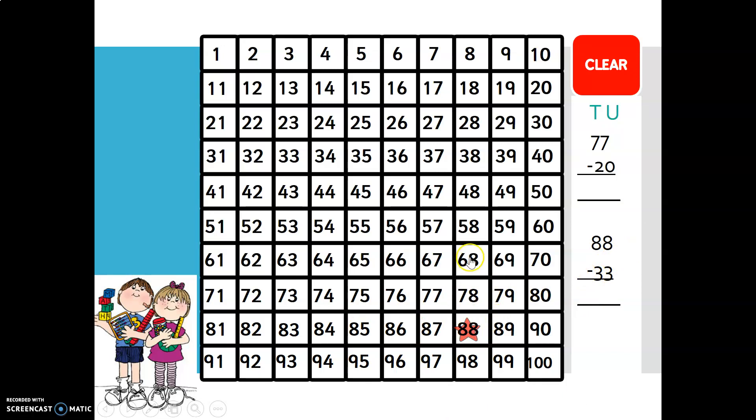Then we look at our units. There are three units, so we need to move to the left three spaces: one, two, three. So 88 minus 33 is 55.